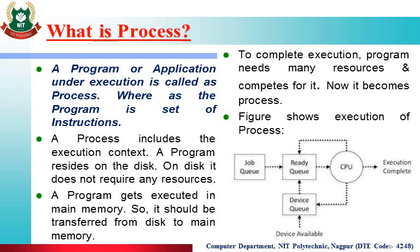The operating system applies the scheduling algorithm on the ready queue, and the ready queue is nothing but your RAM. According to the scheduling algorithm, the operating system selects one process out of the 4 and sends it to the CPU first. That process executes with the CPU. If that process does not need any device to complete its execution, then the process execution is complete. But in case the process requests some device and that device is not available at that time, the process waits for that device in the device queue.